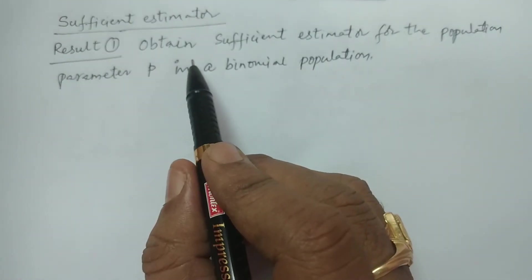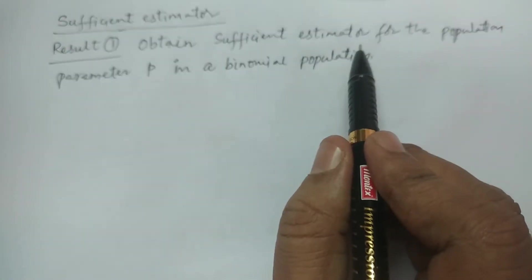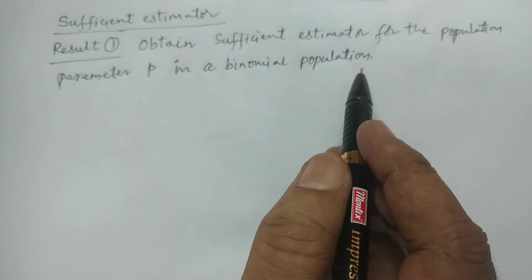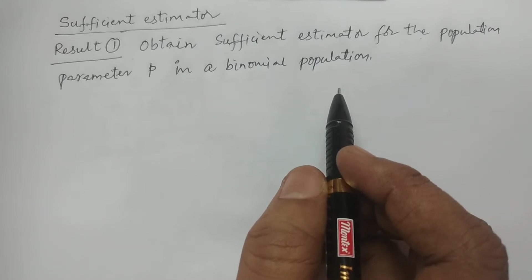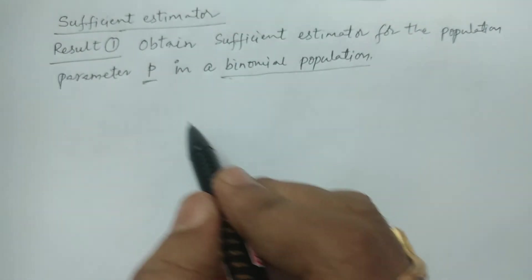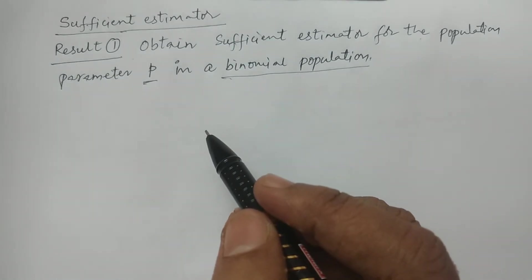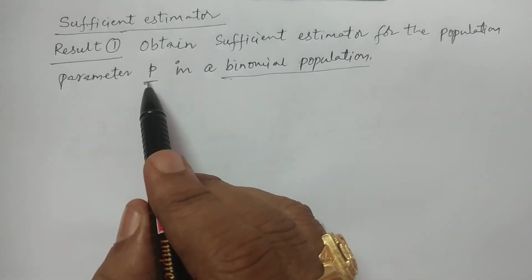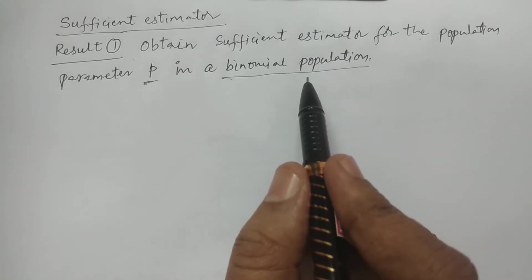The problem is: obtain the sufficient estimator for the population parameter p in a binomial population. In the binomial population, for the population parameter p — that is, the probability of success — how to obtain a sufficient estimator for this particular population parameter p is our question.